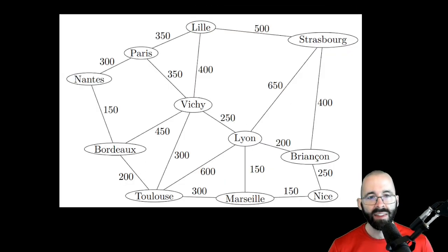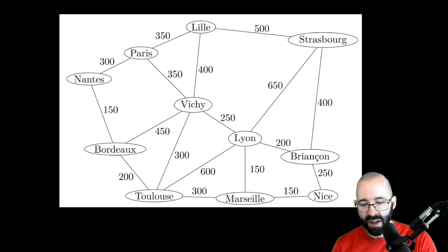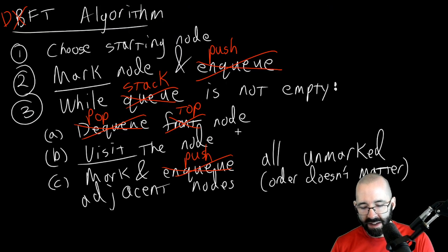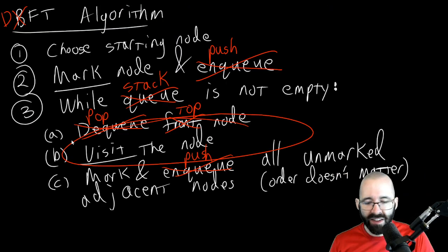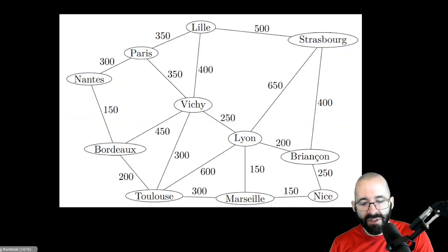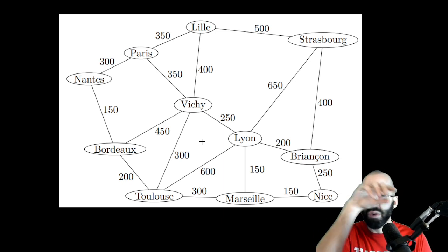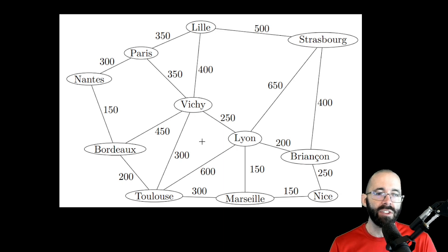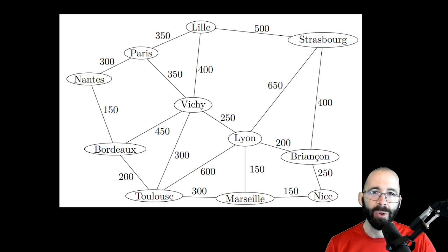In the next video, we're going to talk about traversing graphs specifically to find the shortest path between two things. In these algorithms we kind of just said 'visit the node, do whatever you need to do,' but in the next video we'll introduce an algorithm where visiting the node is helpful in evaluating how to find the shortest path between any two nodes. That's the next video. Stay tuned — have a good one.